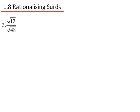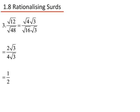Question 3: Sometimes, instead of rationalising, you can just manipulate them. If I had root 12 divided by root 48, I can find the largest square number that goes into both, which gives root 4 multiplied by root 3 divided by root 16 multiplied by root 3. The square root of 4 is 2 and the square root of 16 is 4, so I have 2 root 3 divided by 4 root 3. The top and bottom cancel, leaving me with an answer of a half.